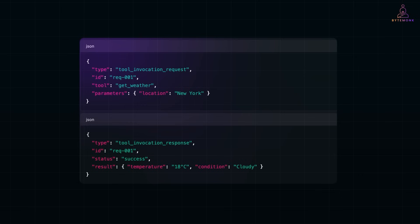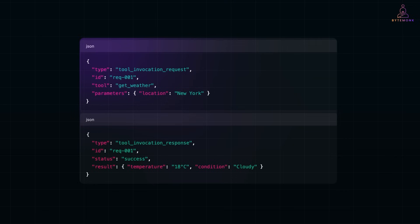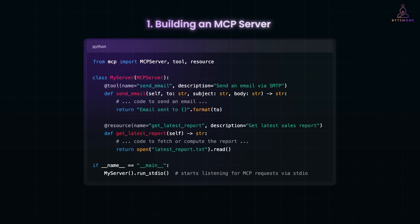The good news is that there are already SDKs to handle this for you — for example, the official Python SDK and TypeScript SDK provide high-level classes to create MCP clients and servers without dealing with raw JSON serialization for every message. To implement MCP, suppose you want to expose a new data source or capability. You would implement an MCP server using the Python SDK — for instance, using decorators to define tools and resources. The SDK handles packaging the function names, arguments, etc. into the MCP protocol format. Running the server opens a JSON-RPC channel over STD-IO, waiting for the AI client to call a tool like 'send_email' or request 'get_latest_report'. Engineers can think of this like defining RPC methods that the client can invoke remotely.